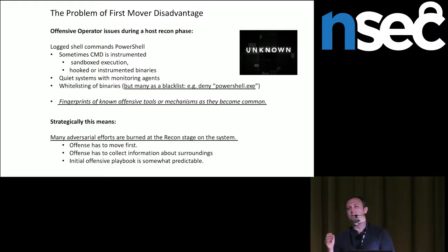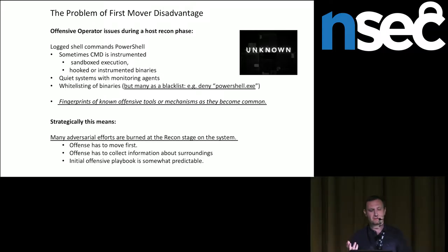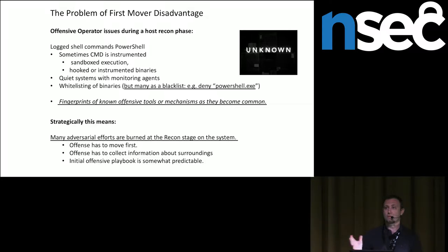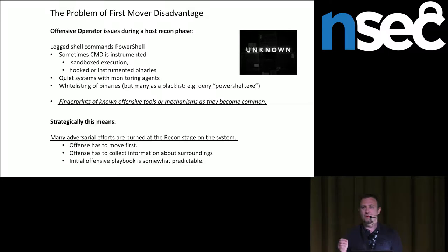The problem of a red team operator, once you get on the host, is that you have a first-mover disadvantage. That means you have to move first to be able to discover what the system is and how it operates. Essentially you need to do your recon first, and you may be stopped by many different things — CMD instrumentation, sandbox execution, monitoring agents on a quiet system, and some companies also do whitelisting of binaries that you can run.